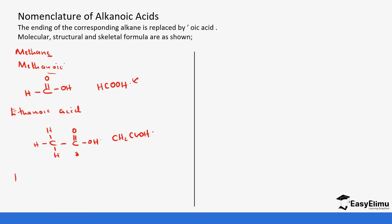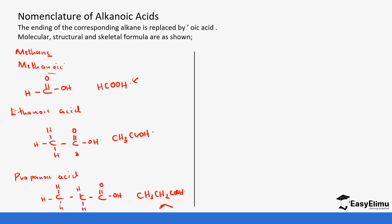Let's look at propanoic acid. This has three carbon atoms. You put the COOH here and you can see how it becomes. When you condense it, it becomes CH₃CH₂COOH. For the skeletal representation, we have a carbon here, a carbon here, and a carbon here — let me do it better so that you can see. In the last carbon, we introduce a double bond and an OH.